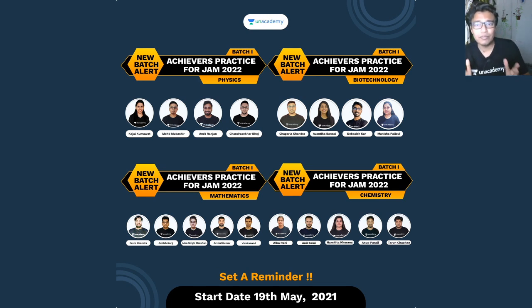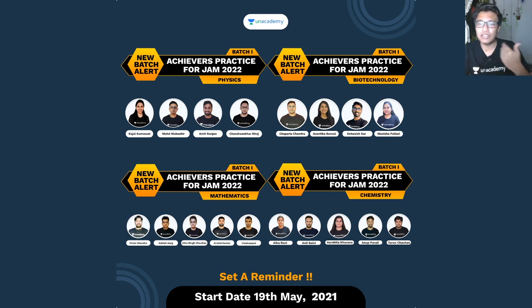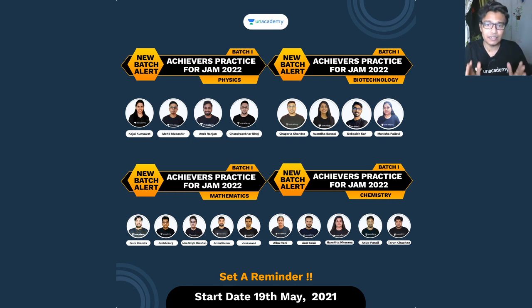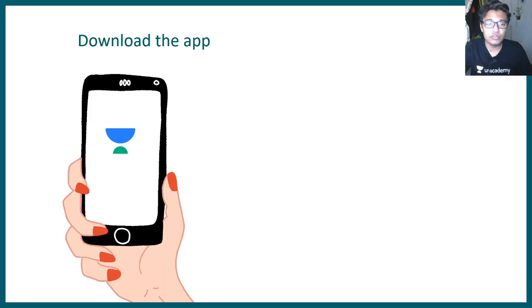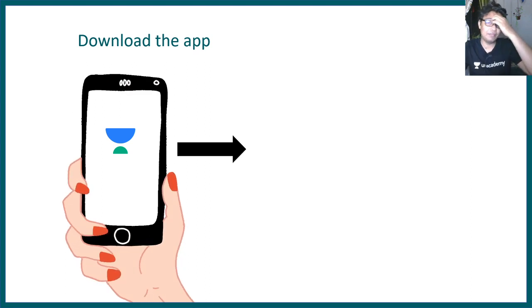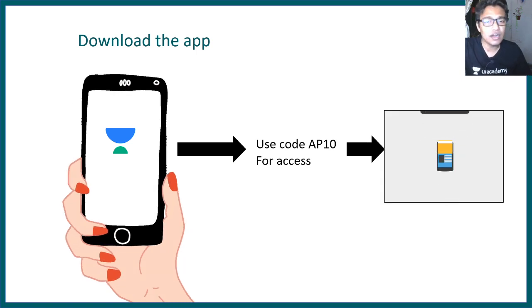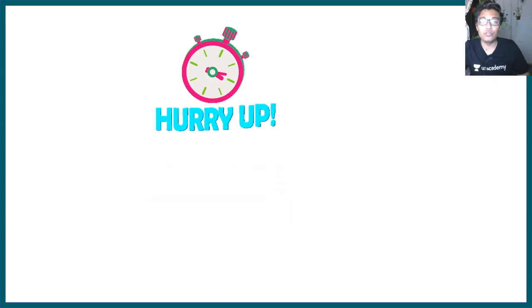There are dedicated batches for these examinations. For example, if you're preparing for biotechnology, there would be an Achiever Practice Batch. If you're preparing for physics, there would be another dedicated batch for you. The educators would really guide you throughout this process. You just need to download the app and use my code AP10 to get a 10% discount. Then you can start learning from these educators, which would make your journey easier. So why wait? Just enroll right now.